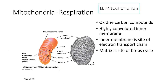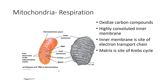The mitochondria is used for respiration — this is where carbon compounds are oxidized. There's a highly convoluted inner membrane, and you can actually see a little piece of DNA there — a highly reduced nucleoid. There are ribosomes within the mitochondria that are not the same as the ribosomes within the cell. The inner membrane is the site of the electron transport chain with very specific proteins. The matrix is the site of the Krebs cycle. This is where most eukaryotic respiration is done.